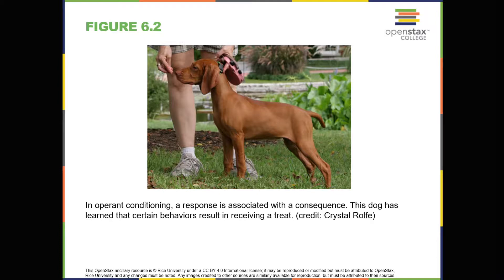In contrast, instincts are innate behaviors that are triggered by a broader range of events, such as aging and the change of the seasons. They're more complex patterns of behavior, involve movement of the organism as a whole — for example, sexual activity or migration — and they involve higher brain centers. Both reflexes and instincts help an organism adapt to its environment and do not have to be learned.